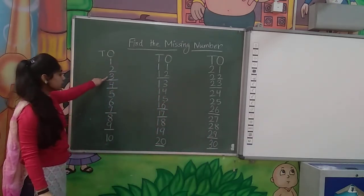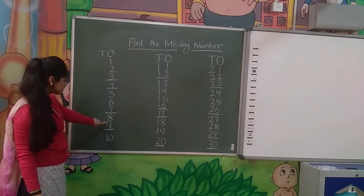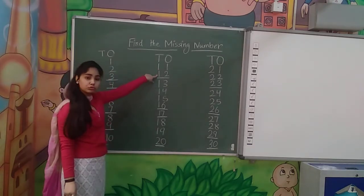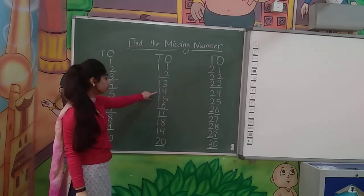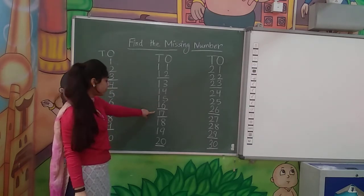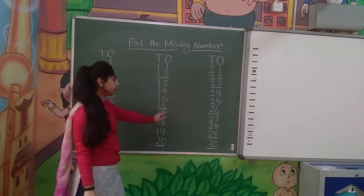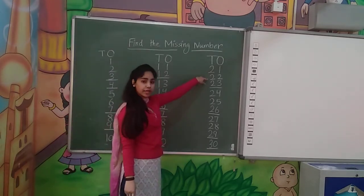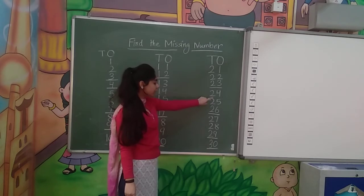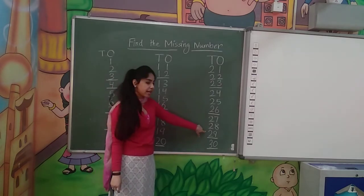1, 2, 3, 4, 5, 6, 7, 8, 9, 10, 11, 12, 13, 14, 15, 16, 17, 18, 19, 20, 21, 22, 23, 24, 25, 26, 27, 28, 29, 30.